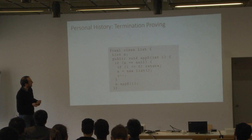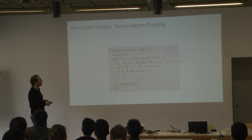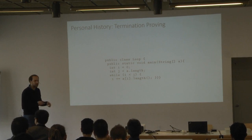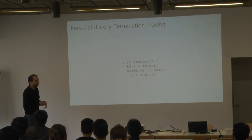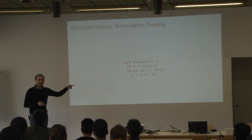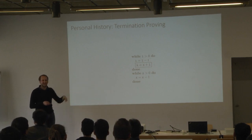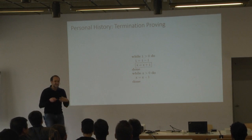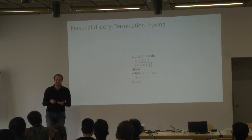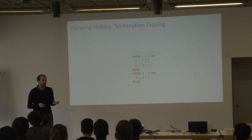Then we did interprocedural analysis and the example grew shorter. Then I proved non-termination and it grew even shorter. Then I proved things on data that is actually cycling — it gets even shorter. Towards the end of my PhD it got slightly longer, but we threw away the heap because we did complexity analysis for a change. And so somehow I realized all of this stuff doesn't really work, even though it looks trivial to everyone in the room.